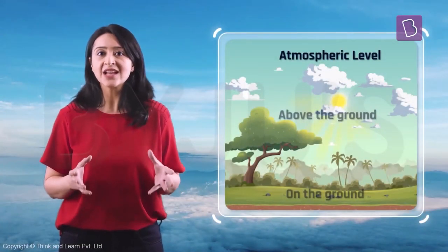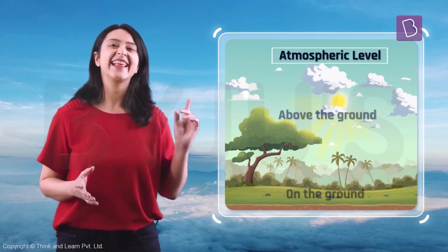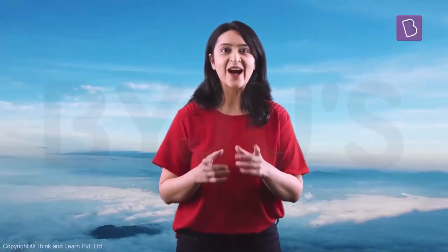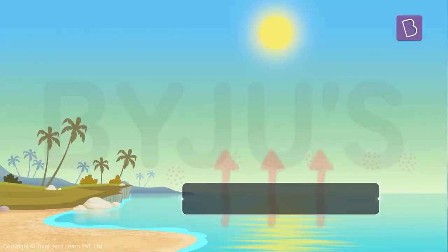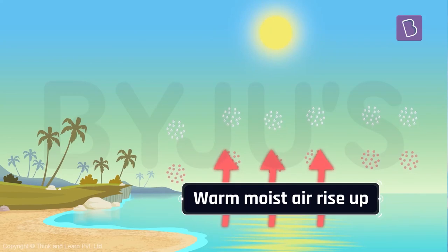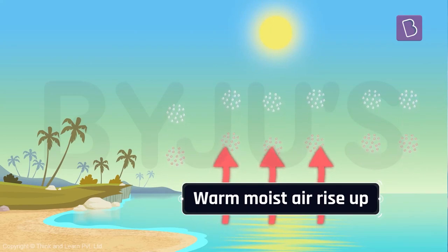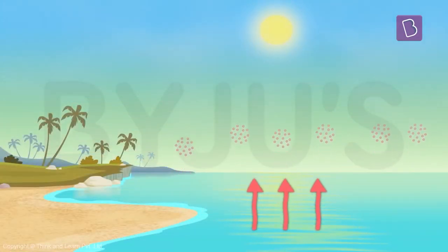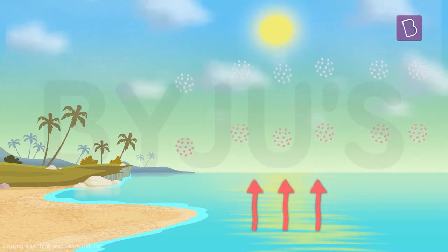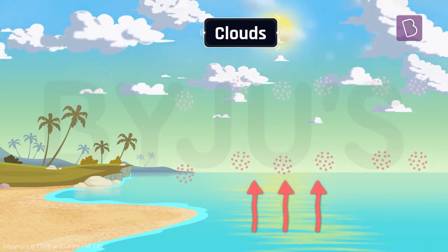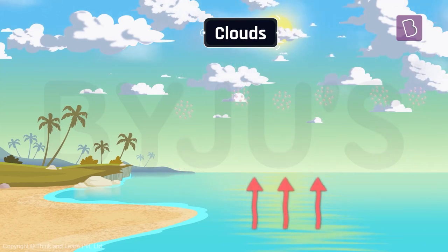What happens when condensation happens at the atmospheric level? It forms clouds, and this brings us to the third category. Warm, moist air near the earth's surface rises up — because hot air rises — but with increasing height, temperature decreases, resulting in cooling of the warm moist air. As the moist air cools down, water molecules condense, creating tiny water droplets which form clouds. These water droplets accumulate around dust particles, creating the big clouds that you see.